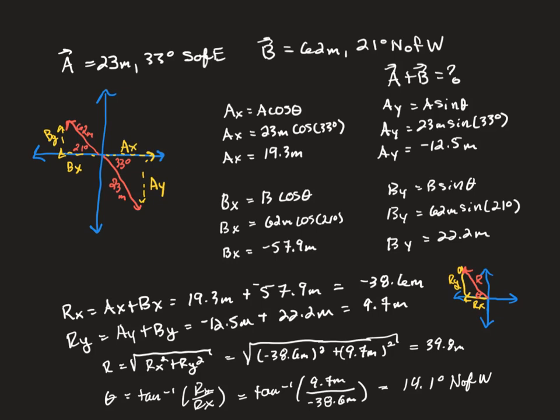In this video, we are going to do an example problem involving adding vectors using the component method. So we have two vectors here. Vector A is going to be 23 meters, 33 degrees south of east, and vector B is going to be 62 meters, 21 degrees north of west. And our goal is to add vector A to vector B and figure out what the resultant is.